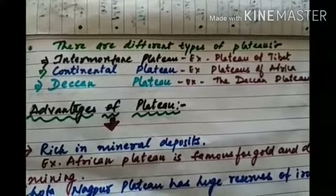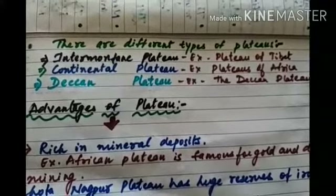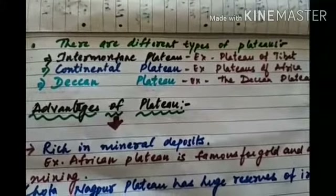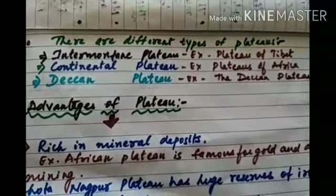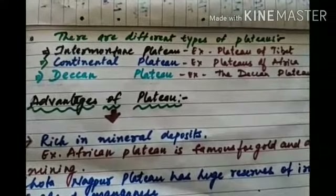Next is the continental plateau. An example is plateaus like those of Africa that rise abruptly from the coast or the surrounding plains.